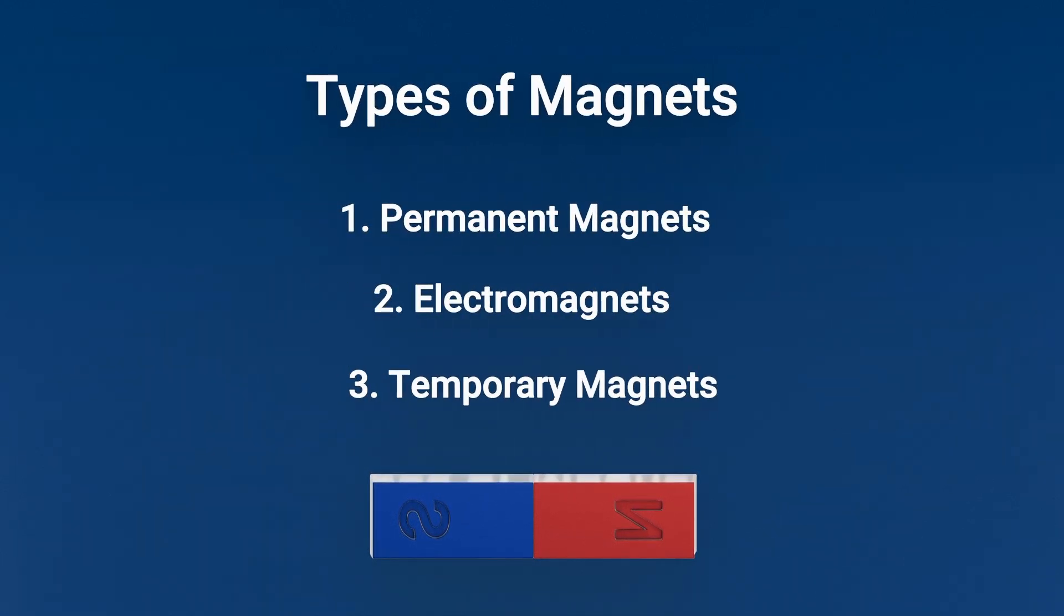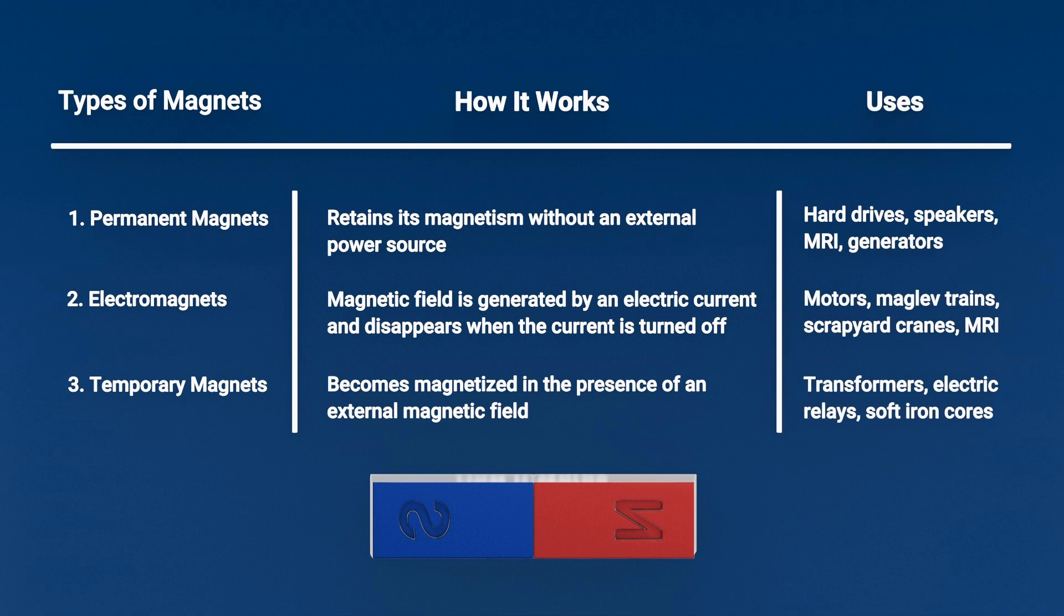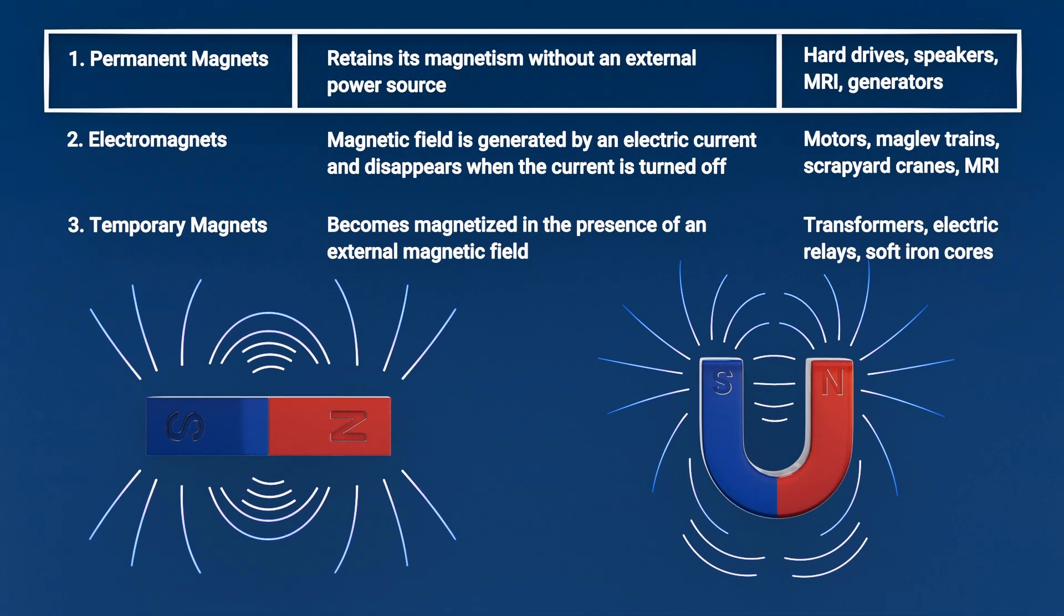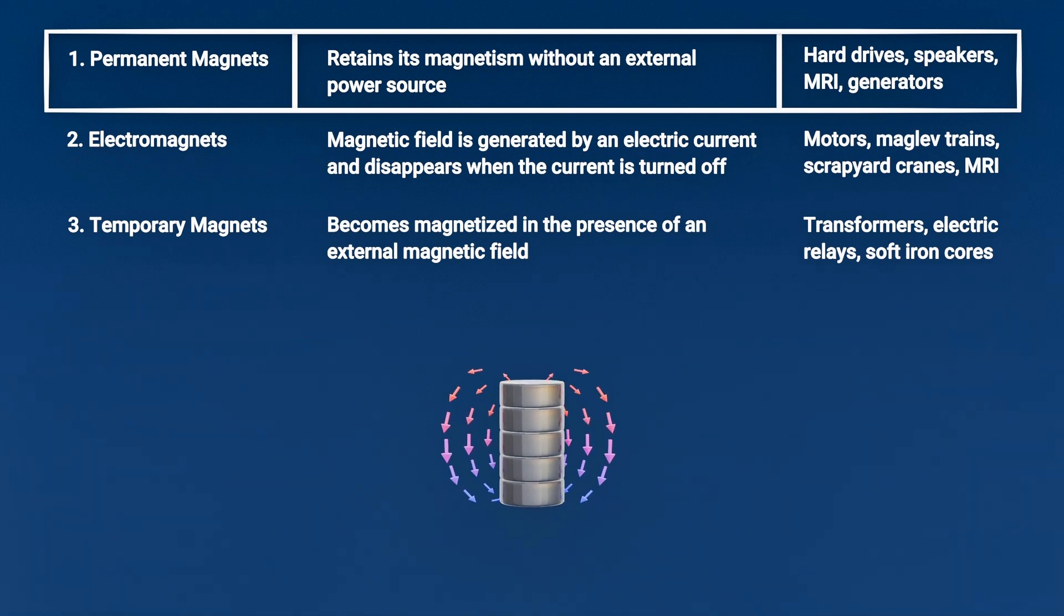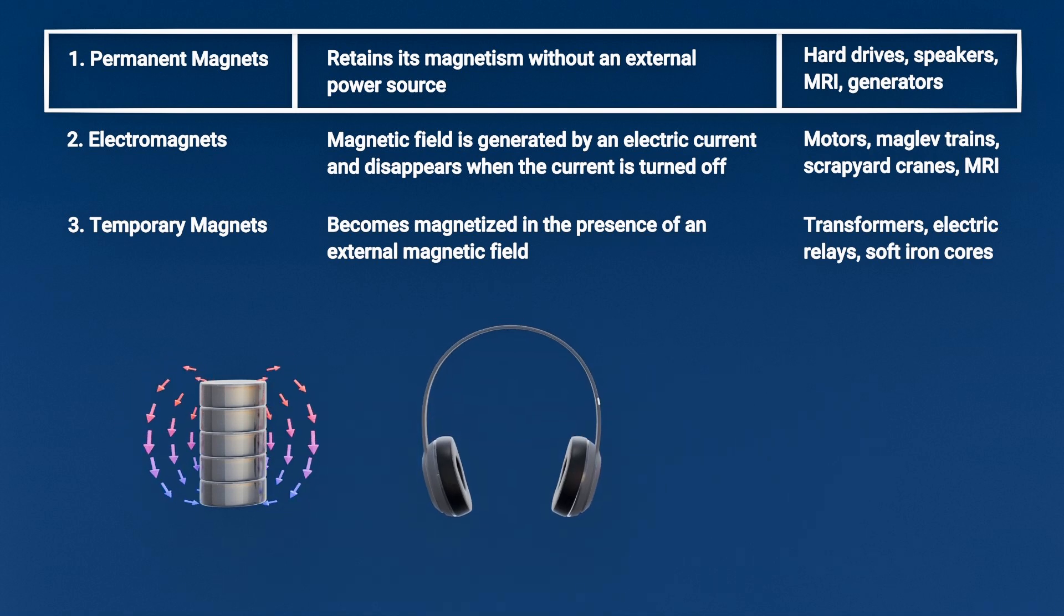Types of magnets. Not all magnets are created equal. Let's look at some common types. 1. Permanent magnets. These maintain their magnetic field without needing external power. Neodymium magnets, for example, are incredibly strong and used in everything from headphones to electric vehicle motors.